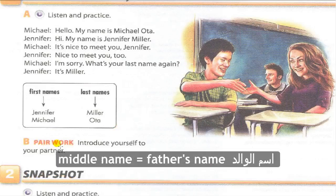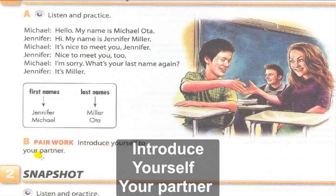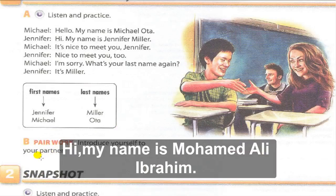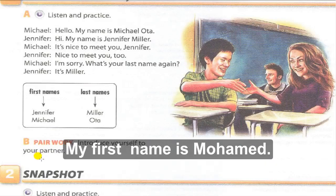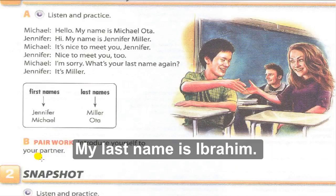Part B — Pairwork: introduce yourself to your partner. Introduce yourself to your friend. Hi, my name is Muhammad Ali Ibrahim. My first name is Muhammad, my middle name Ali, my last name — my family name — Ibrahim.